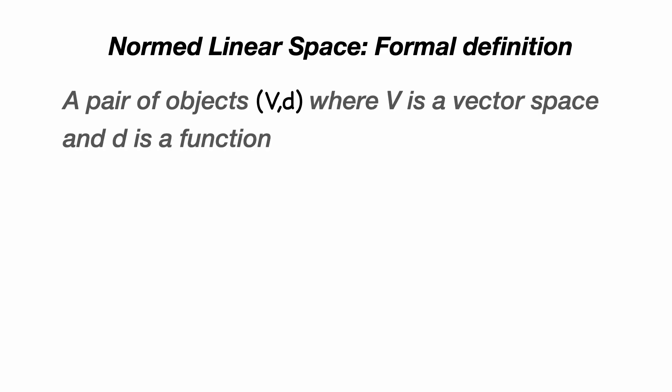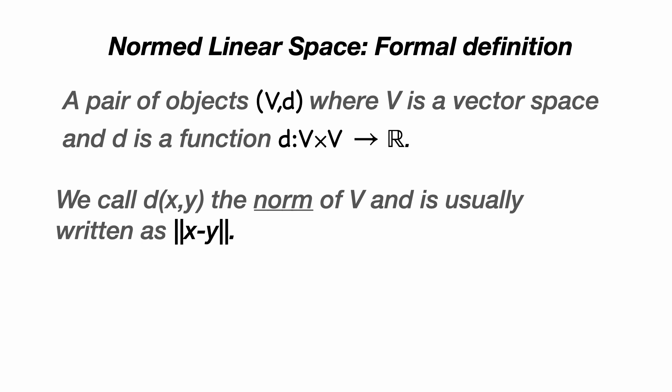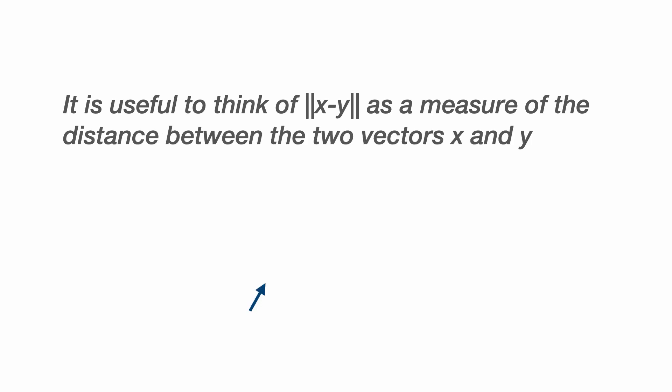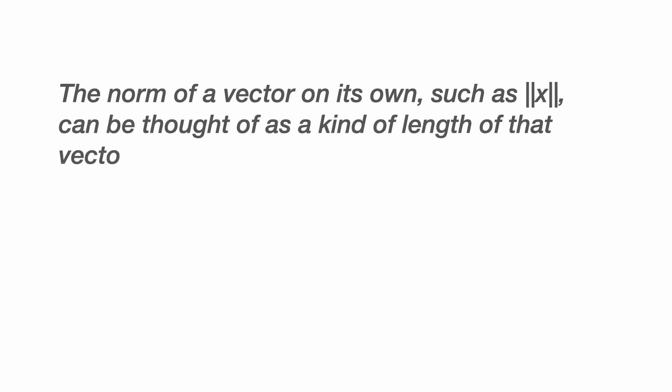It's a pair of objects, V and d, where V is a vector space embedded in a metric space, and d is a function which takes V cross with itself and maps it to the real numbers. So it behaves like the distance function of a metric space. We call d of X and Y the norm of V and it's usually written with two sets of vertical parallel lines. It's useful to think of the norm of X minus Y as a measure of the distance between two vectors X and Y. But bear in mind that X minus Y, where X and Y are both vectors, is a vector in itself. And if we write down the norm of a vector on its own, for example the norm of X, we can think of that as some kind of measure of the length of that vector.